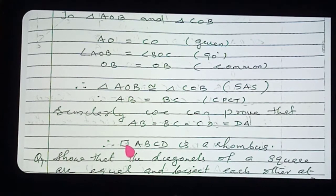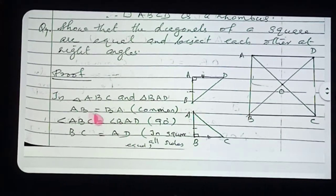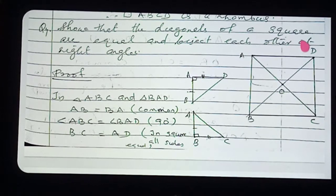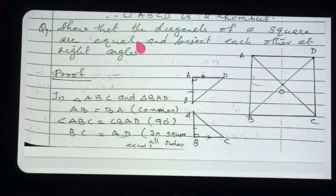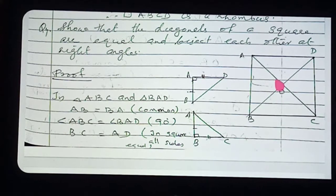Now, question number 4. Show that the diagonals of a square are equal. We want to prove: first, that the diagonals of a square are equal; second, that the diagonals bisect each other; third, that the angle formed is a right angle. Three parts are there, so we can prove them one by one.